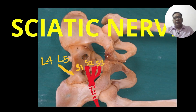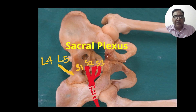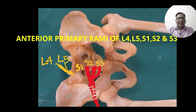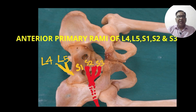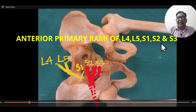First we will see about the origin and root value of the sciatic nerve. It takes origin from the sacral plexus and it is formed by the union of ventral primary rami of L4, L5, S1, S2 and S3.